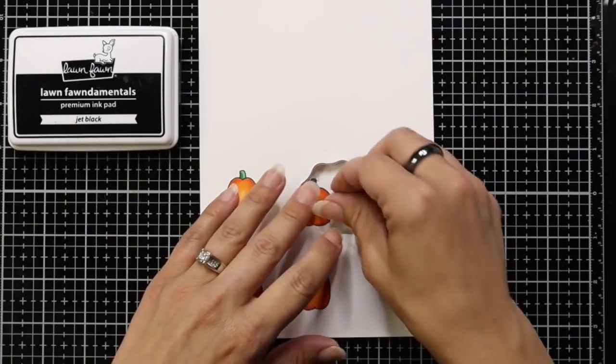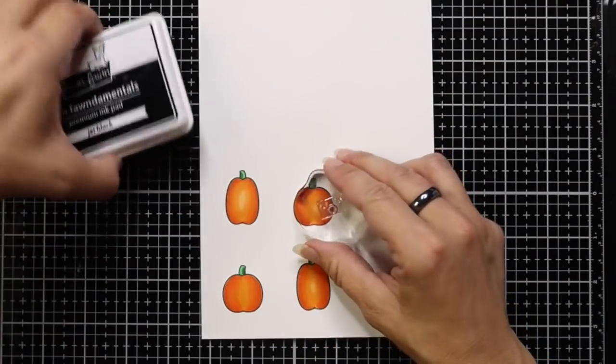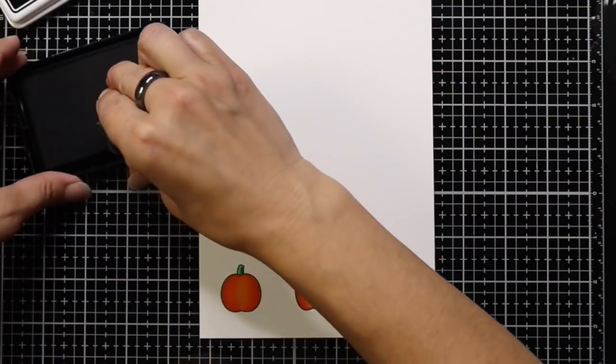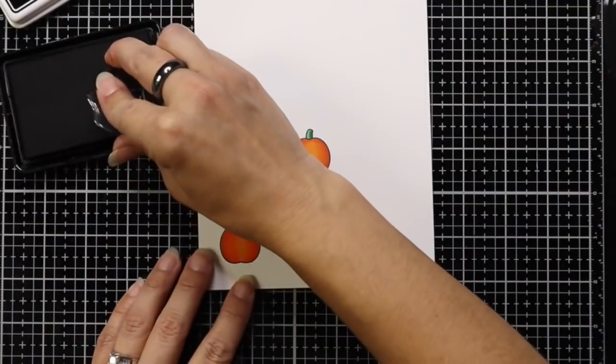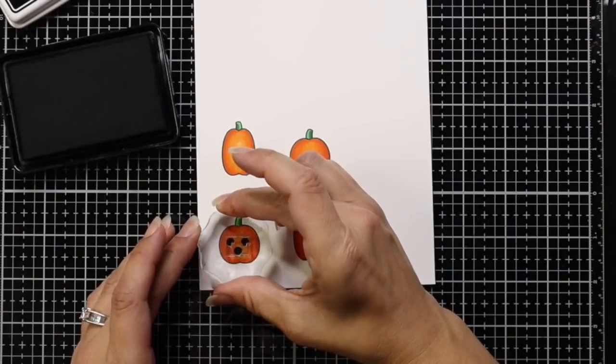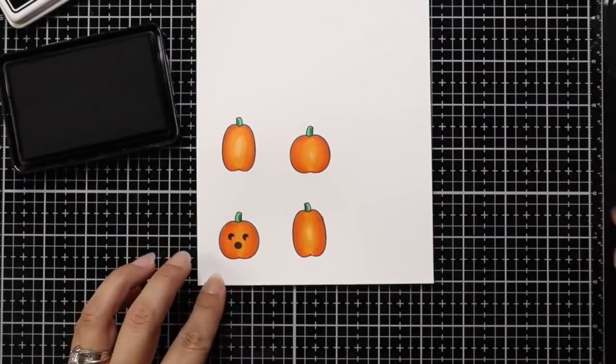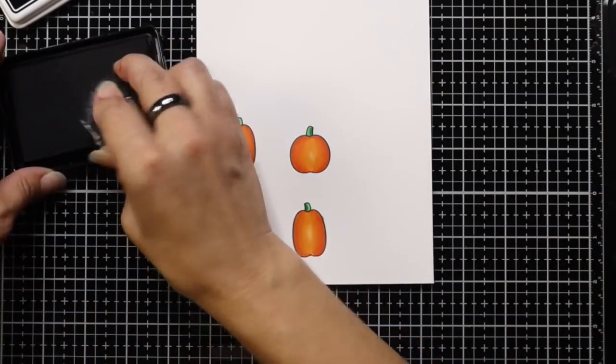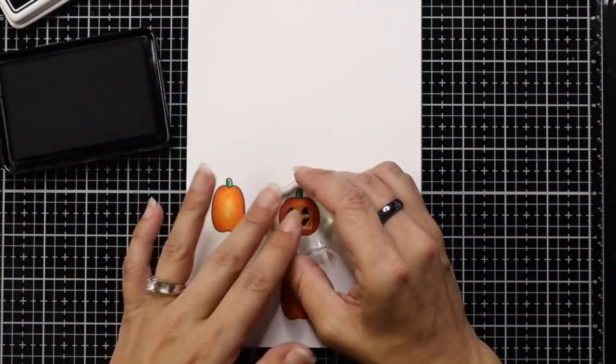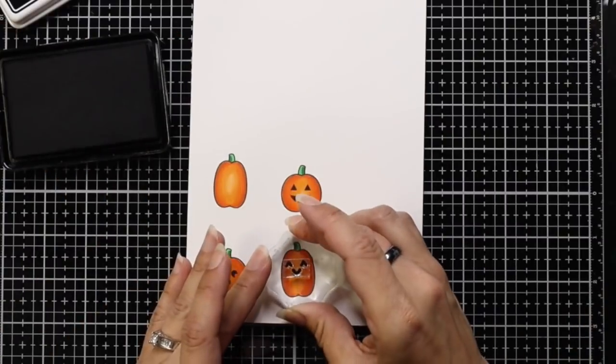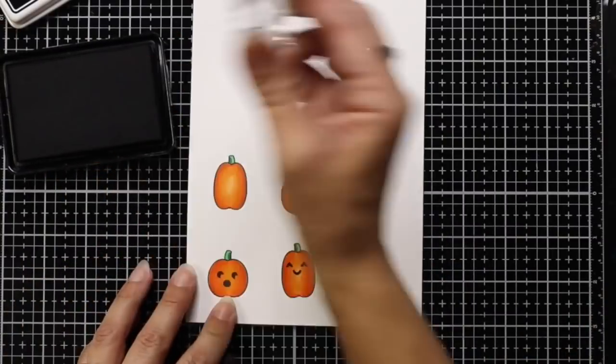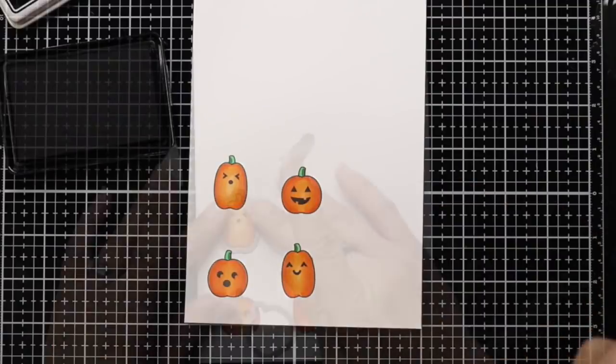On the pick of the patch stamp set are these really fun faces you can add to your pumpkins. So I'm just going to take a small acrylic block and some of the jet black ink, and I'm going to stamp a variety of faces on these pumpkins. So I made sure each one had a different face just to kind of make my background a little more fun. There's the traditional jack-o'-lantern look, but some of these are spooky or smiling.